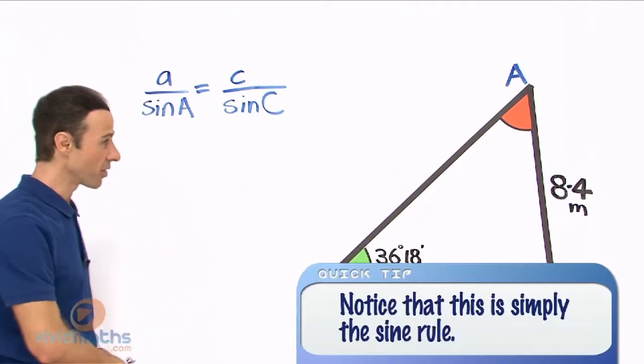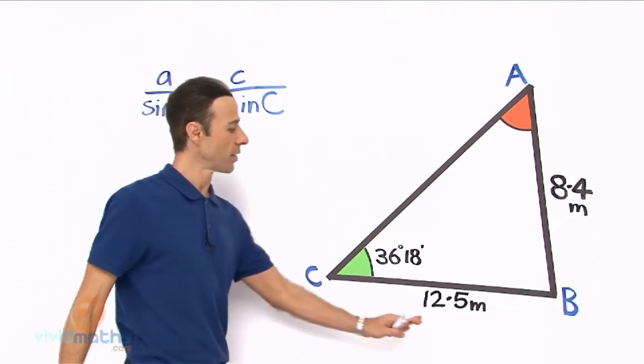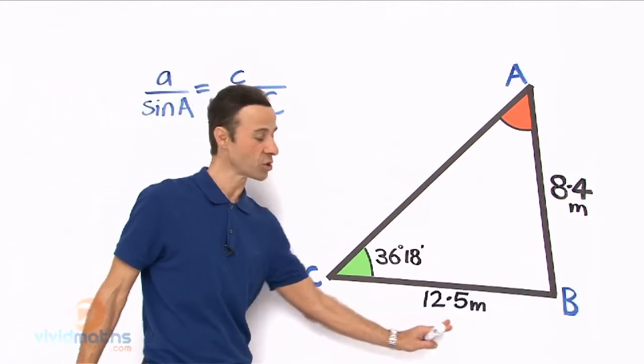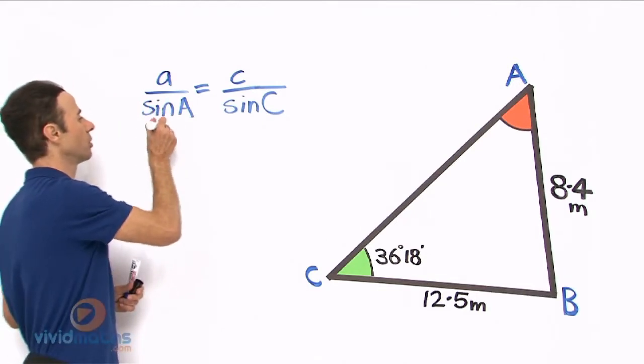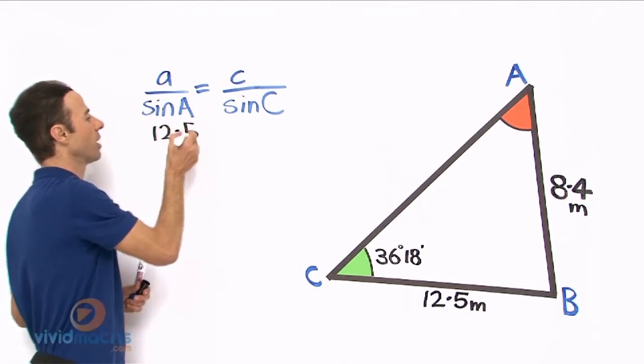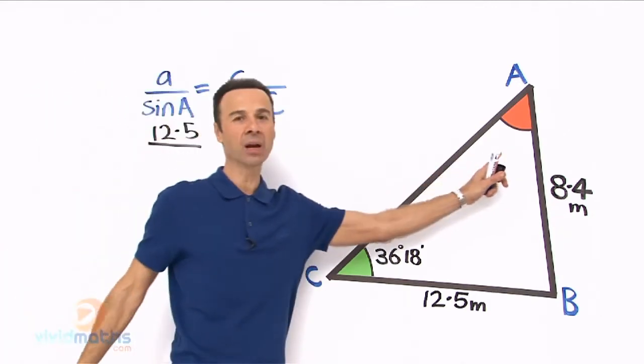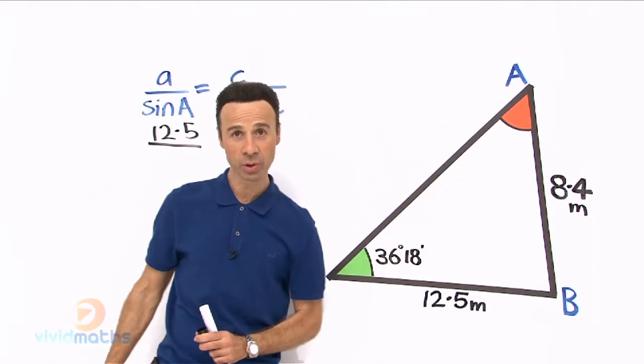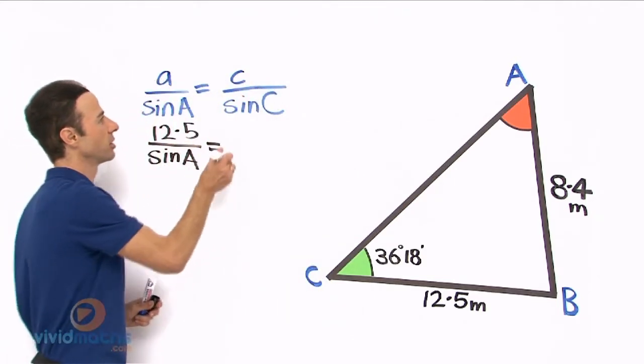So here is the sine guideline. Let's put in the appropriate values. First of all, we have the length here for little a, that is 12.5. Let's put that in: 12.5 all over sine a, that is the angle here in orange that we are looking for.